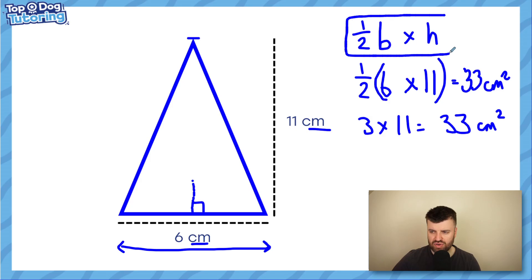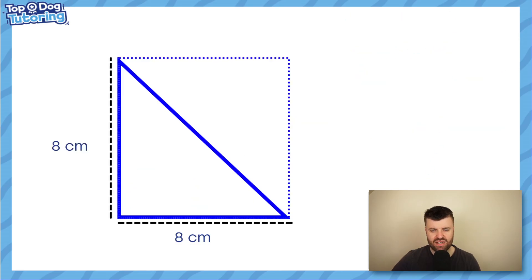So the formula to work out the area of a triangle is half base times height. Now this is why. Because when we do base times height, here's another triangle with a base of eight, so eight centimeters, and a height of eight also. Now the area of this dotted square, which you can see going around, would easily be worked out by doing just base times height. So eight times eight is 64 centimeters squared.